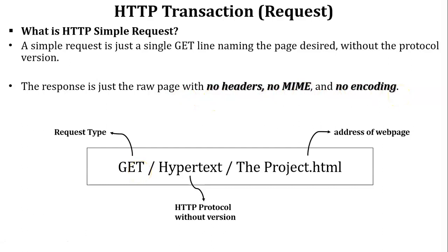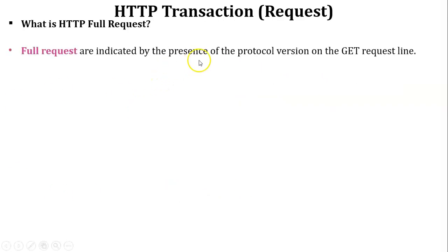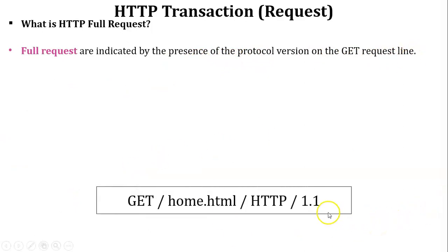In the previous slide we saw the HTTP message request format, which includes a header. So whenever an HTTP simple request is sent from client to server, there is no header. Next, what is an HTTP full request? HTTP full requests are indicated by the presence of the protocol version on the GET request line. In the example of an HTTP full request, the protocol version is included inside the GET request line — here the protocol version is 1.1.